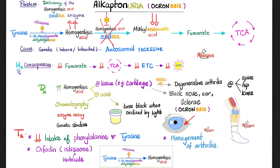Homogentisic acid increases in the urine can be detected by chromatography, which can establish the diagnosis. If you leave that urine and expose it to light, light will oxidize it and the urine will become black in color. Can you name the disease where if urine is oxidized by light or exposed to air, it turns a purple or wine-like color? Let me know in the comments. You can also measure the level of homogentisic acid oxidase — it will be low. Genetic studies for the autosomal recessive disease also establish the diagnosis.